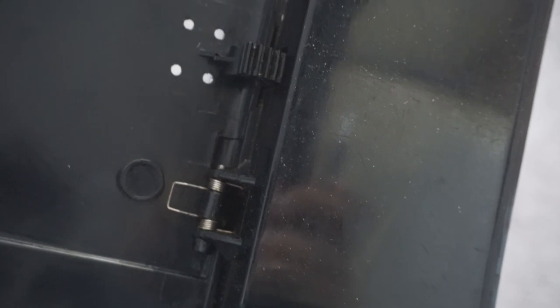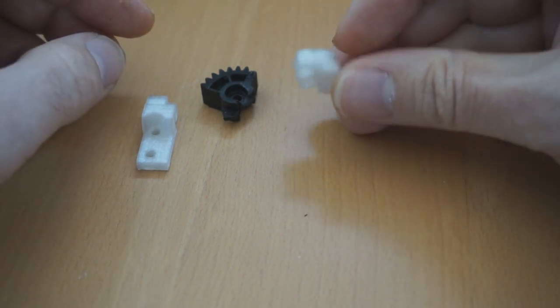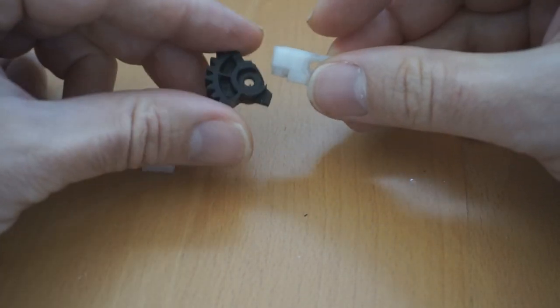So how to repair it? Gluing was not possible because the weight of the lid is too much for glue. So I decided to print two parts that can bring the gear, the black gear, in the right place.